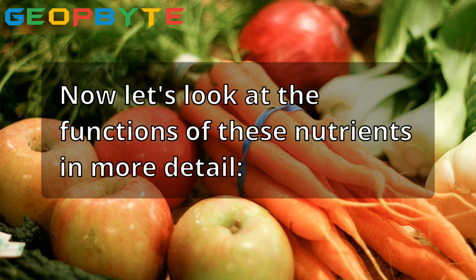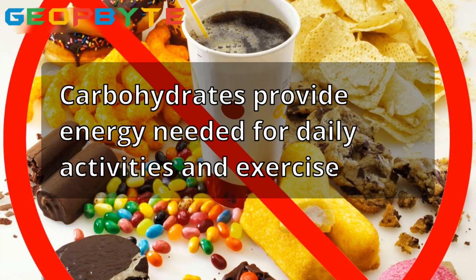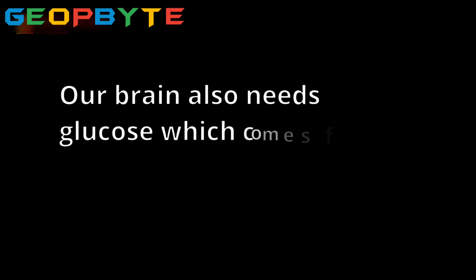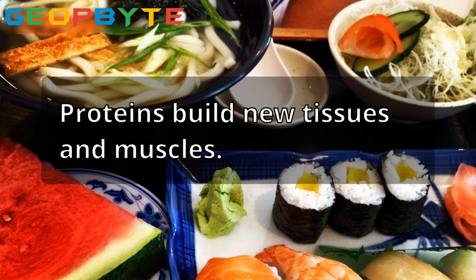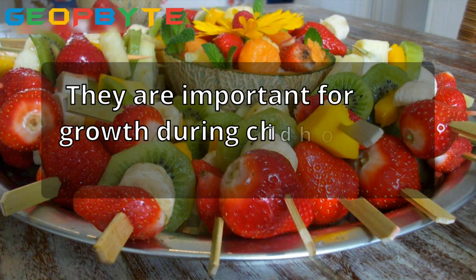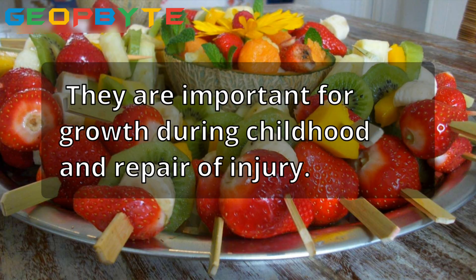Now let's look at the functions of these nutrients in more detail. Carbohydrates provide energy needed for daily activities and exercise. Our brain also needs glucose, which comes from carbs. Proteins build new tissues and muscles, and are important for growth during childhood and repair of injury.